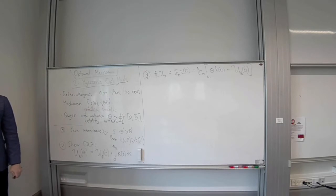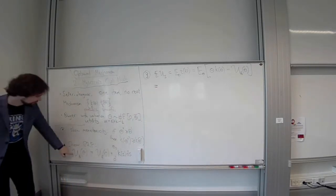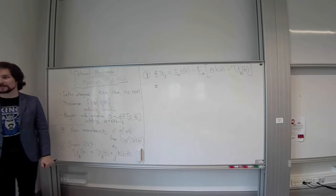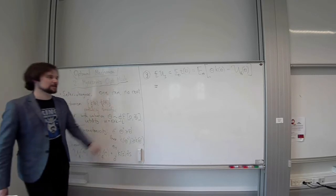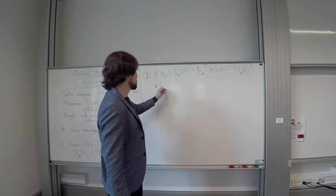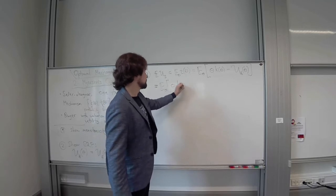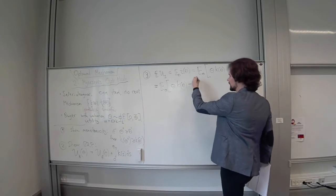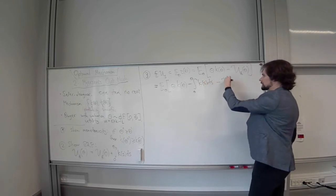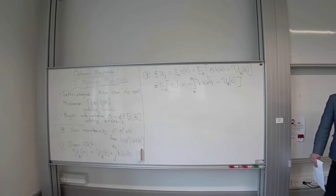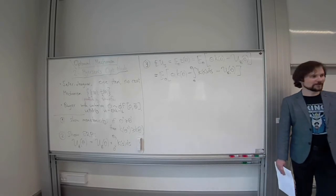Now we plug in the envelope representation of U_B(θ). The expected revenue becomes: E_θ[θ·k(θ)] minus E_θ[integral from 0 to θ of k(s) ds] minus U_B(0). Writing the expectation as an integral, we get: integral from 0 to θ̄ of θ·k(θ)·φ(θ) dθ, minus the double integral (outer from 0 to θ̄, inner from 0 to θ) of k(s) ds times φ(θ) dθ, minus U_B(0).